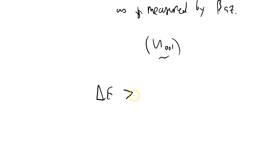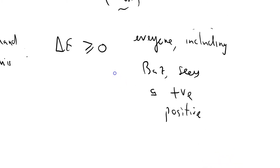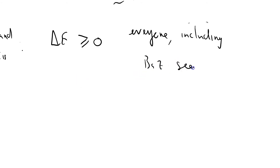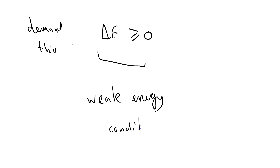It's not unreasonable to demand that ΔE is greater than or equal to zero. We demand this — that means everyone, including Baz, sees that ΔE is greater than or equal to zero. And this is known as the weak energy condition, which is a physical condition on the stress-energy tensor.